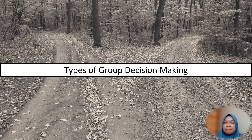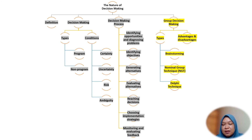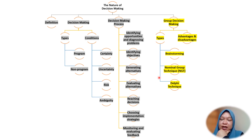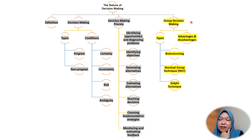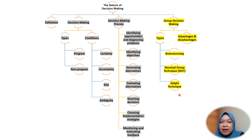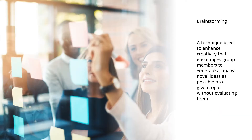Now let's look at the types of group decision making. Previously we discussed making decisions individually — the steps a manager takes alone. Now we consider making decisions in a group: sitting together with a few people and trying to solve problems collectively. There are three types: brainstorming, nominal group technique, and Delphi technique. We will also look at the advantages and disadvantages of group decision making.